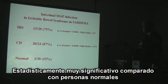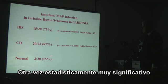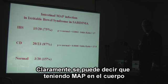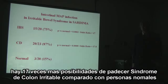This was very highly statistically significant compared to normal people. There was also a very high incidence of MAP detection in Crohn's disease, again with very high statistical significance. In ordinary language, what this meant was that if you had a MAP infection, you were 17 times more likely to get IBS than if you did not have a MAP infection.